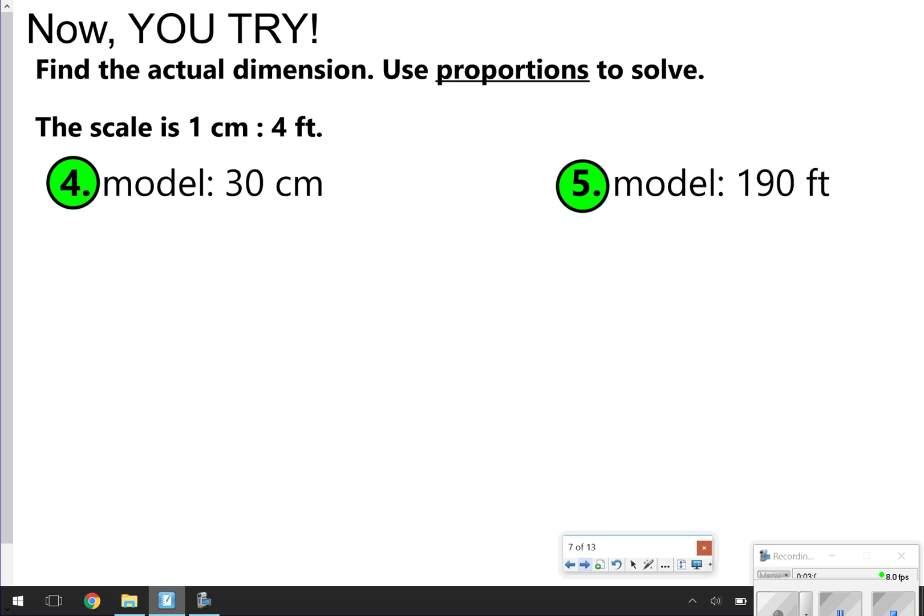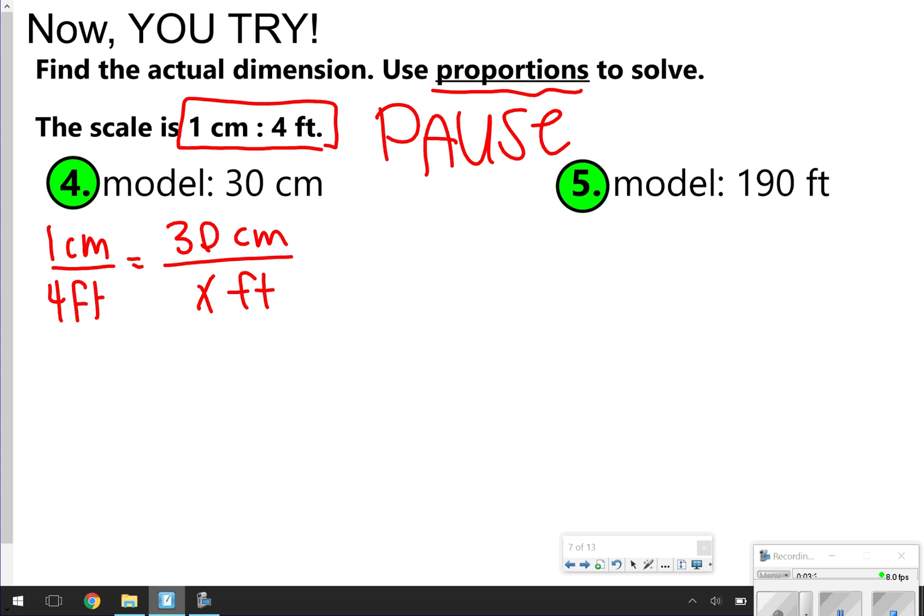Then these two you're going to try. Again, make sure that you're using proportions to solve. So I maybe can go ahead and help you set these up. 1 centimeter over 4 feet, again using this same scale, is equal to 30 centimeters over x feet. I'm going to go ahead and start you setting up on number 4. You're going to finish number 4 by yourself, as well as number 5. Once you're done, you click play. But for now, go ahead and pause it so you can try questions 4 and 5.